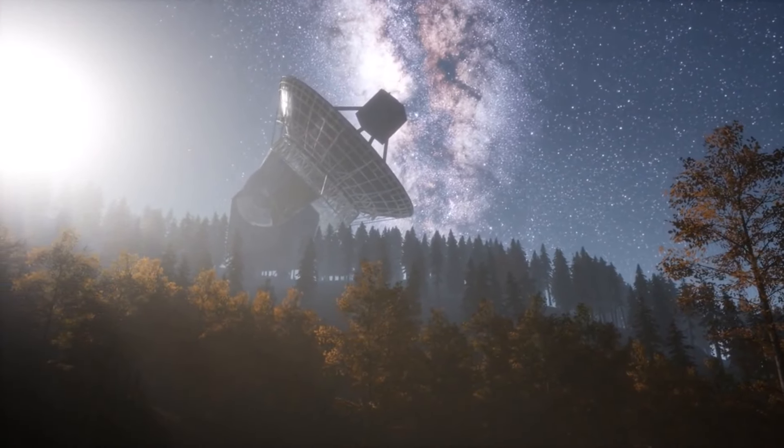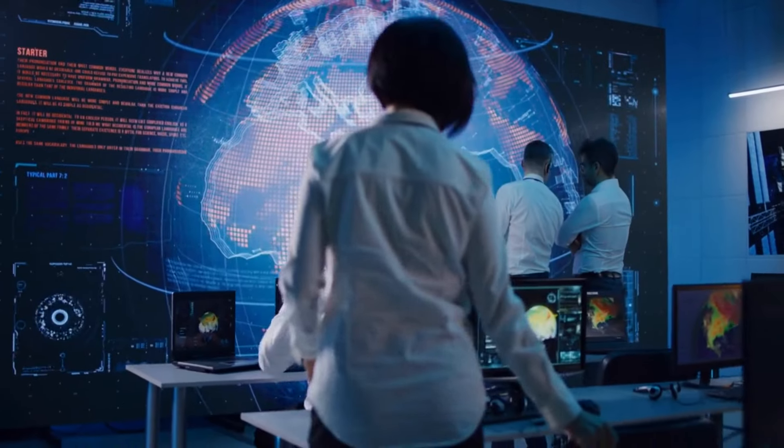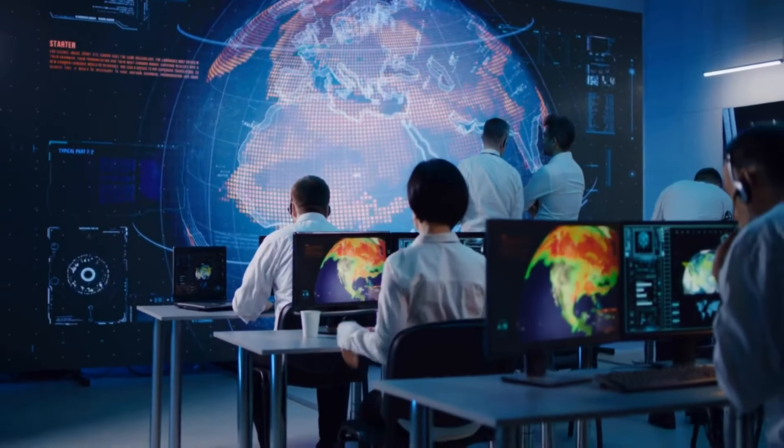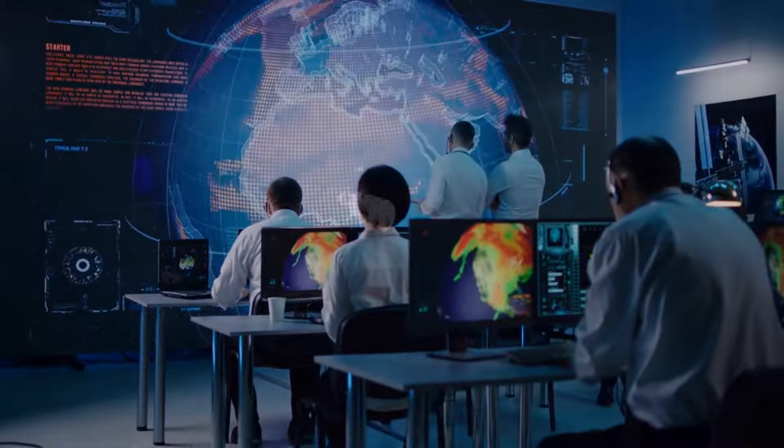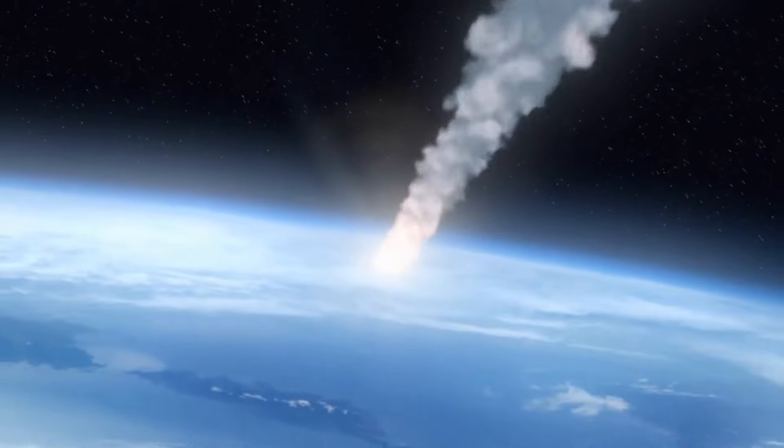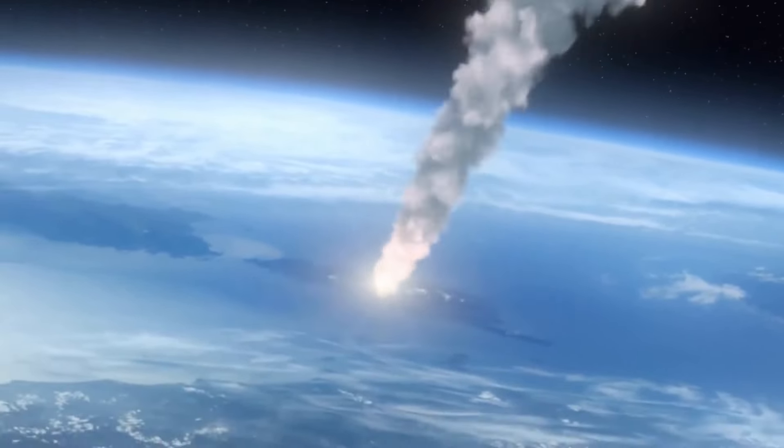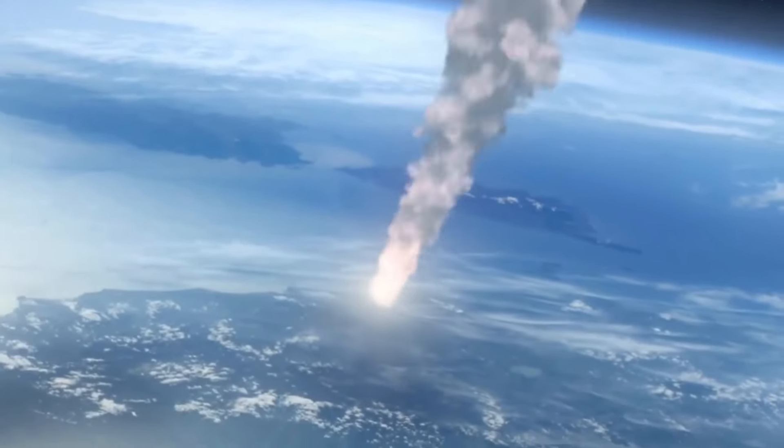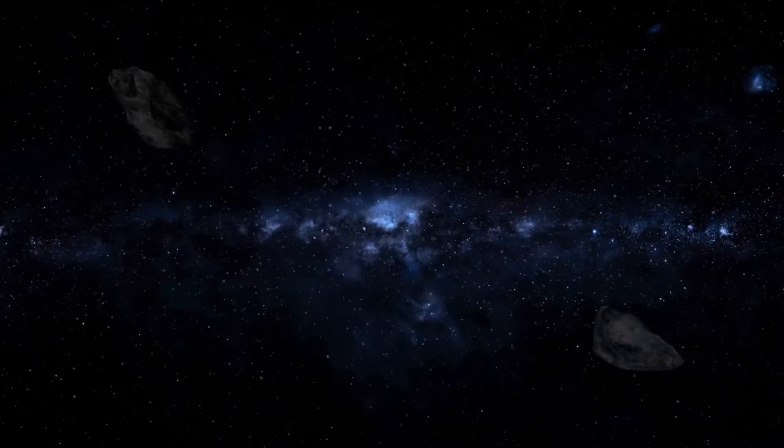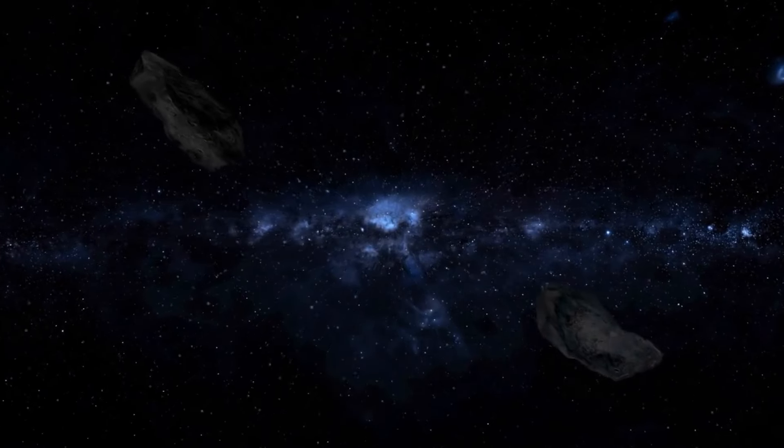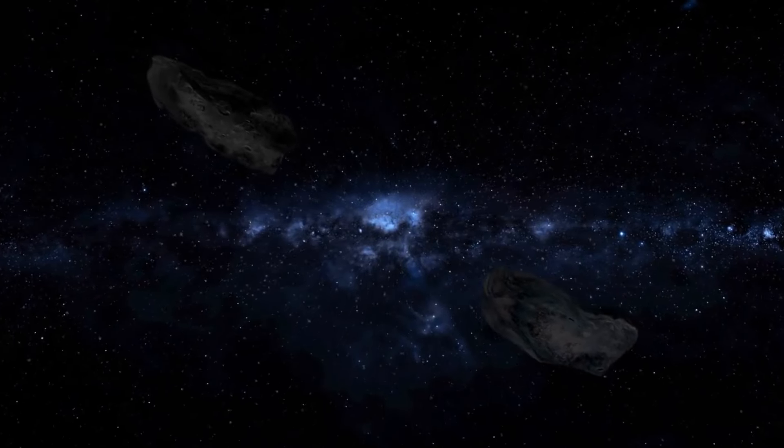And doing something about them is becoming less of a sci-fi dream and more of a scientific reality. Methods range from the gentle-nudge approach, where a spacecraft slowly alters an asteroid's course, to the more Hollywood-style nuclear deflection. While the former is less dramatic, it's also a lot less likely to turn the asteroid into a shower of smaller, but still dangerous, fragments. And with space missions like NASA's DART, the Double Asteroid Redirect Test, we're not just talking about these methods, we're actually testing them.